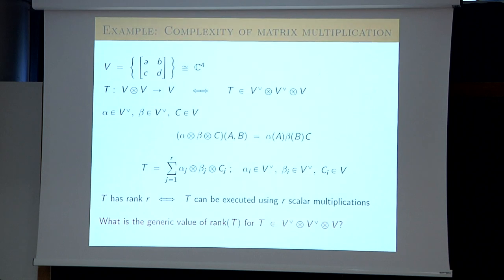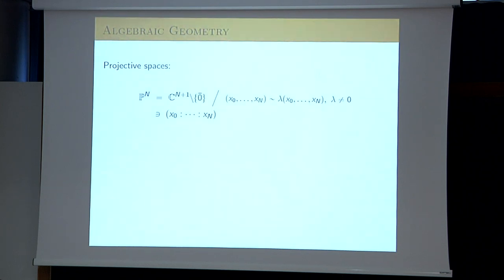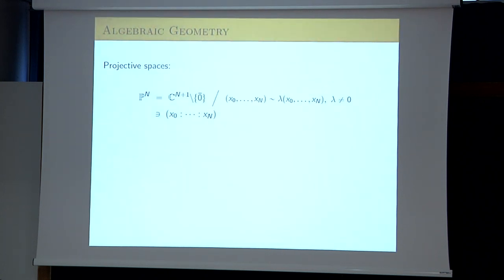We have passed from the problem of multiplying matrices to the problem of tensor decomposition. Now I want to introduce algebraic varieties in this context. Let me start with the definition of projective space. The projective space of dimension n is the set of one-dimensional linear subspaces of C^(n+1). We consider the vector space of dimension n+1 minus the origin, and identify all vectors lying on the same line through the origin. Any point in C^(n+1) different from zero gives a point in the projective space, with projective coordinates that are only defined up to scalar multiple λ.